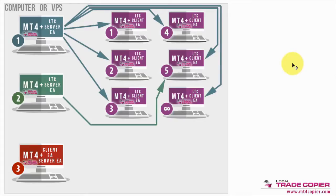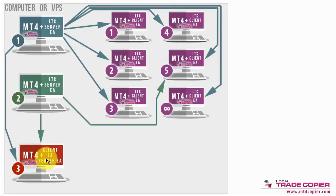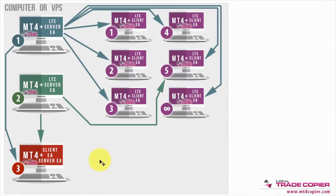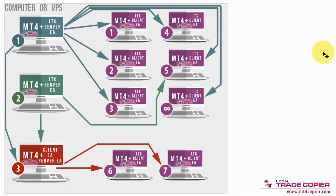Let's go even further. I get a third MetaTrader account. This one will first act as a client account, receiving trades from master accounts one and two. And then it will also act as a server account — the same MetaTrader account can act as both client and server at the same time. So it receives trades from masters one and two, combining them. Then using the server EA I set up a third group of trade copies, and copy those to two more MetaTrader client accounts — numbered six and seven in this demonstration.